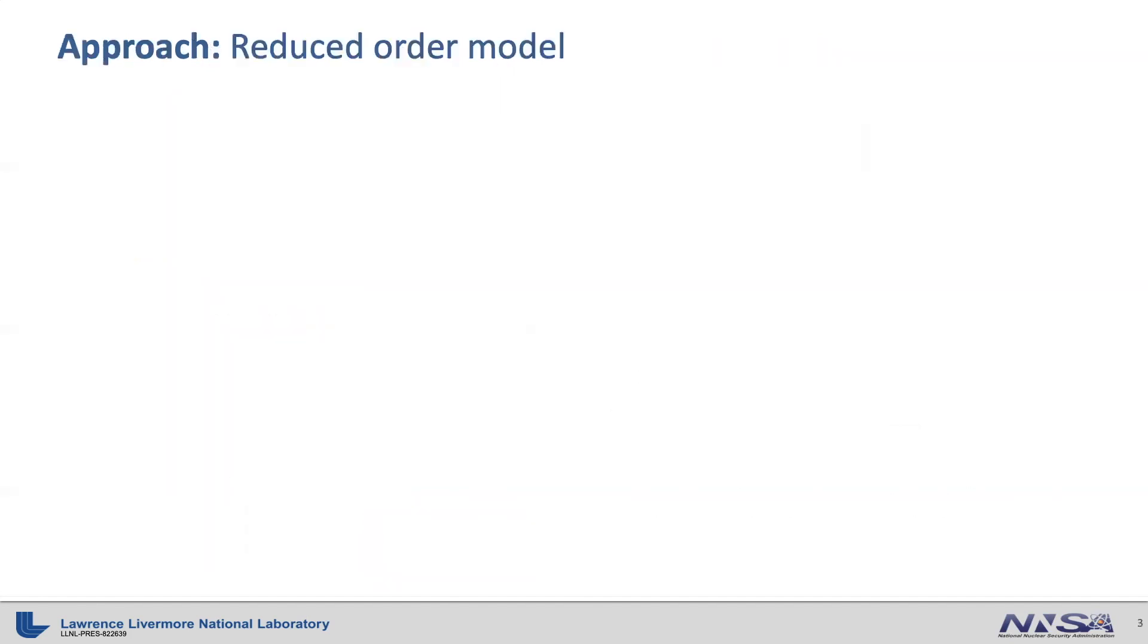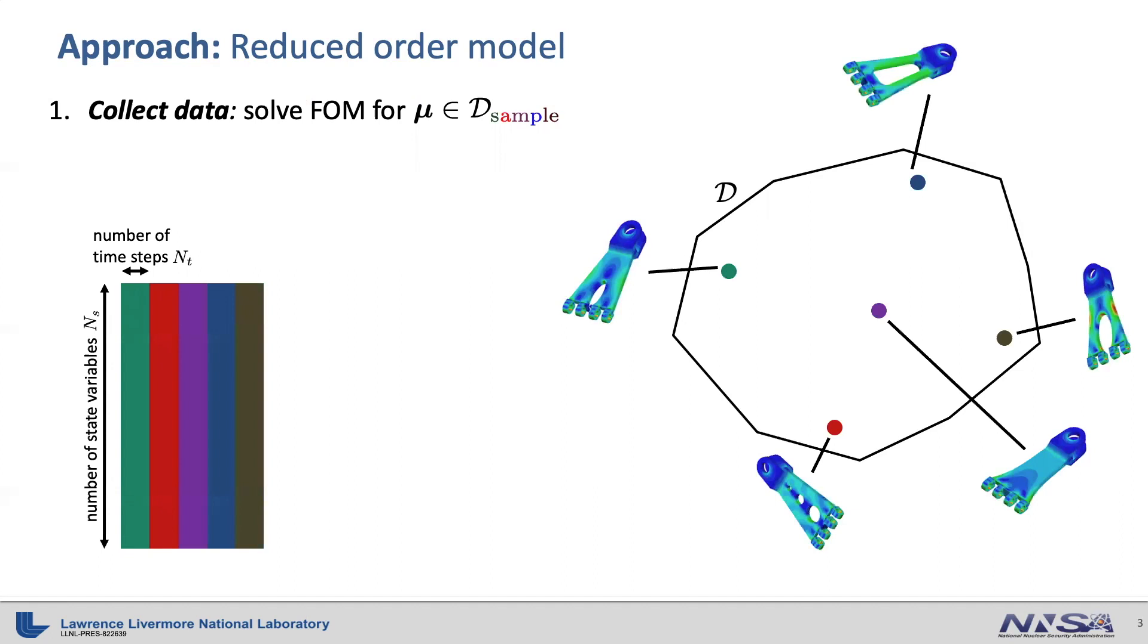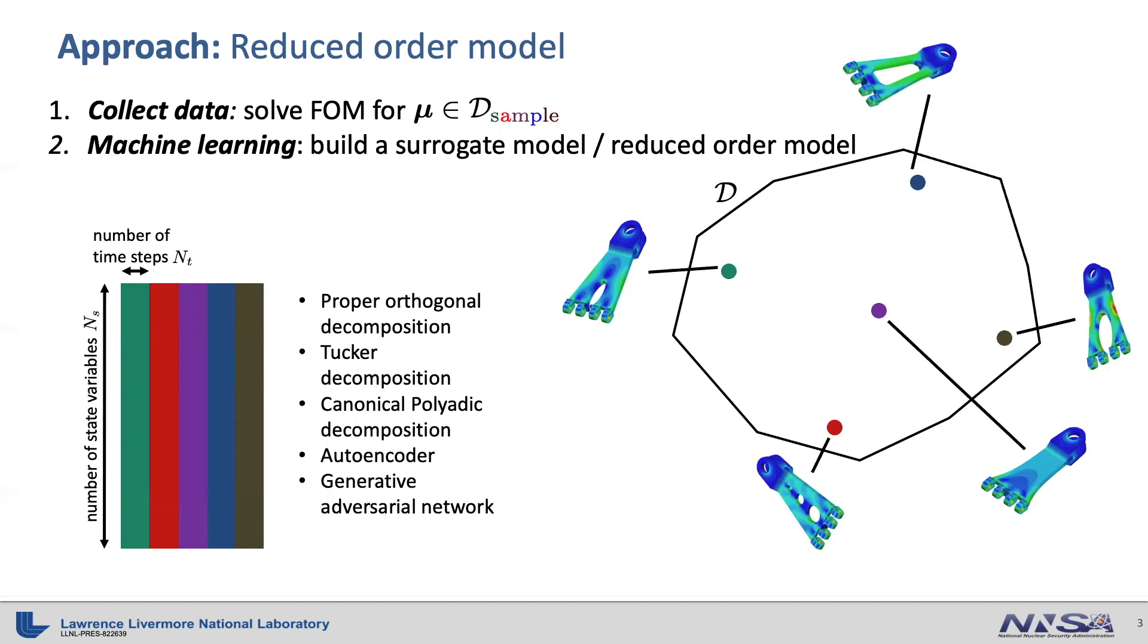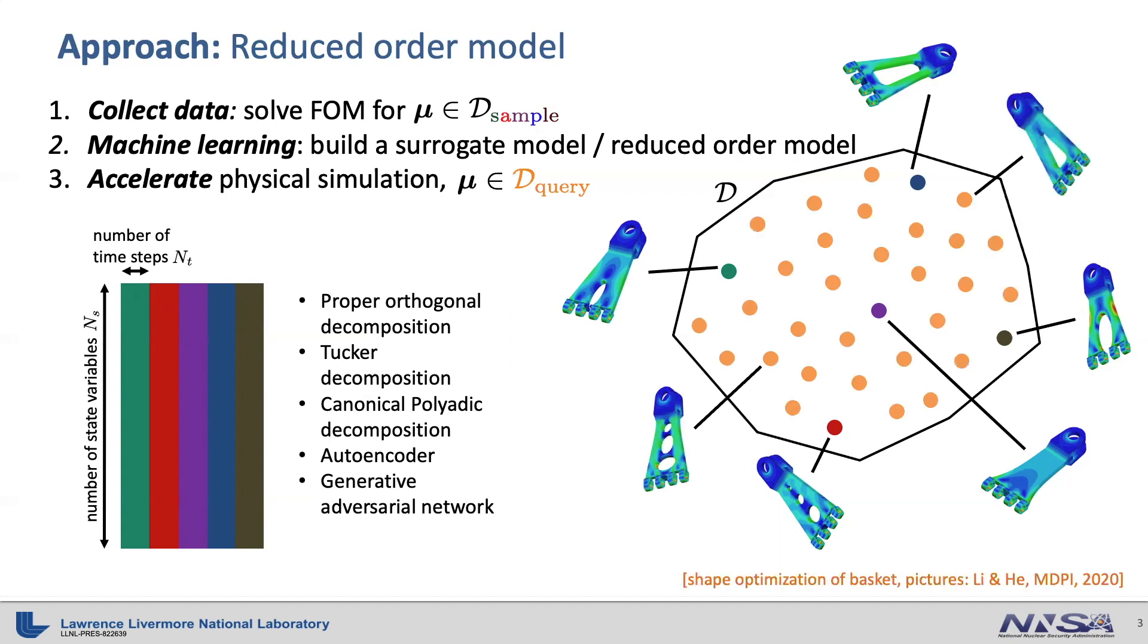Such a reduced order model can be built by first considering a design space where you collect data by solving full order model for several sample points. Then you apply machine learning techniques to build a reduced order model. I'm especially interested in building an efficient reduced order model that includes the physics information as much as possible using existing numerical methods such as finite element, finite volume, and finite difference methods. Various machine learning techniques are available as listed here. Then using the surrogate model, you can accelerate simulations with various query points which you have not used in the training phase. This data-driven approach has been successfully applied to various applications.